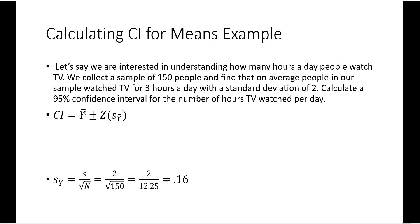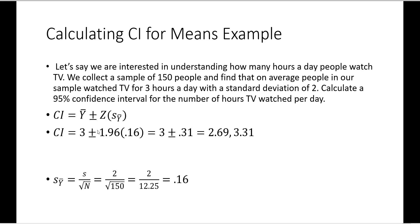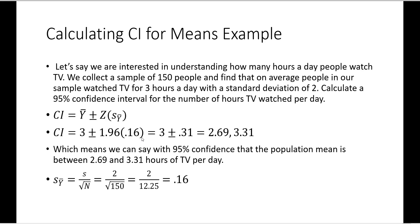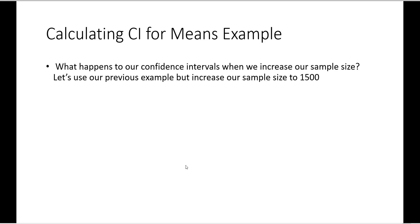Plugging that into our confidence interval equation, we have 3 — our mean — plus or minus 1.96, the z-score for 95% confidence, times 0.16, our standard error. We get 3 plus or minus 0.31, or 2.69 and 3.31. We interpret this by saying that with 95% confidence, the population mean falls somewhere between 2.69 and 3.31 hours of TV per day.